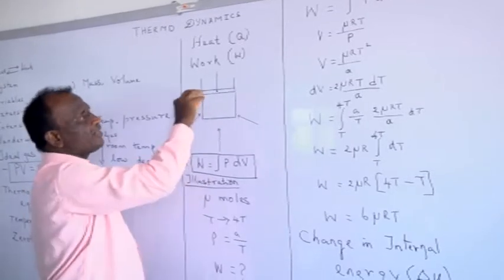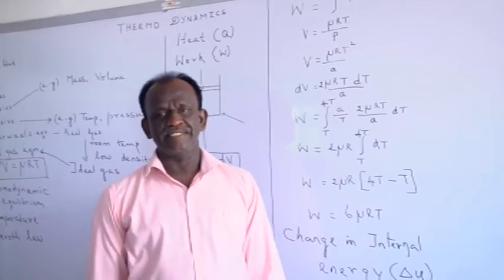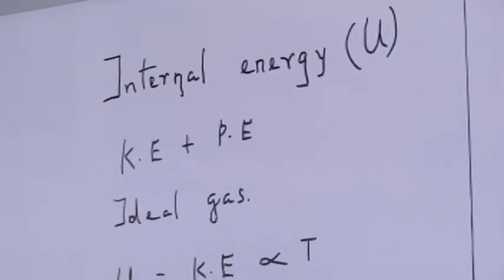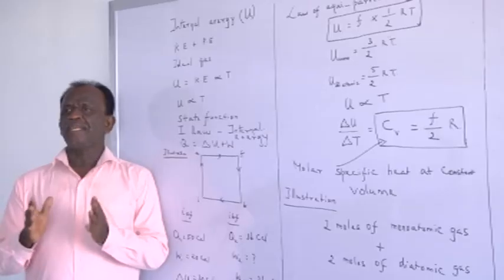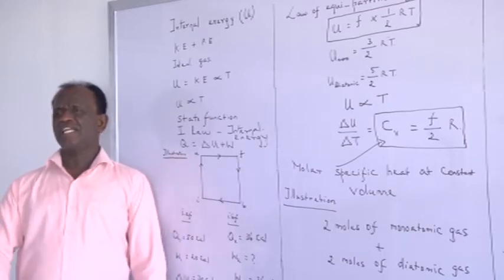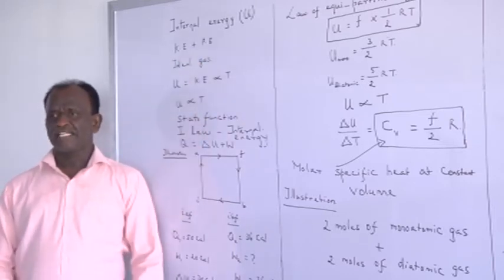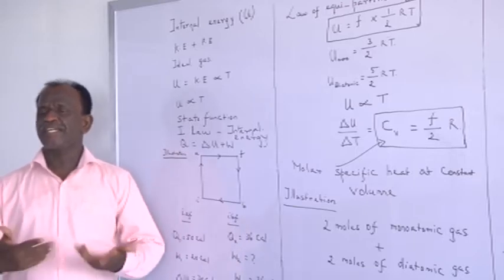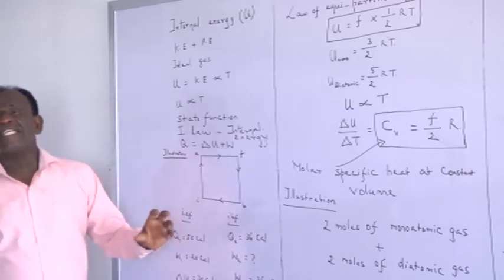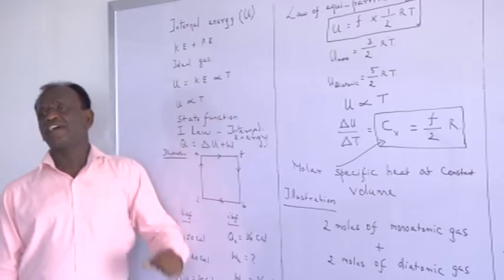The amount of heat supplied to a system not only increases the work done but also produces what is called a change in internal energy. A gas has many molecules, and what exists between these molecules is an intermolecular attraction. This intermolecular attraction leads to potential energy for the gas. While we supply heat energy to the gas, it provides kinetic energy to the gas molecules. As a result, the gas has an internal energy which is the summation of kinetic energy plus potential energy — but this holds only for real gas.